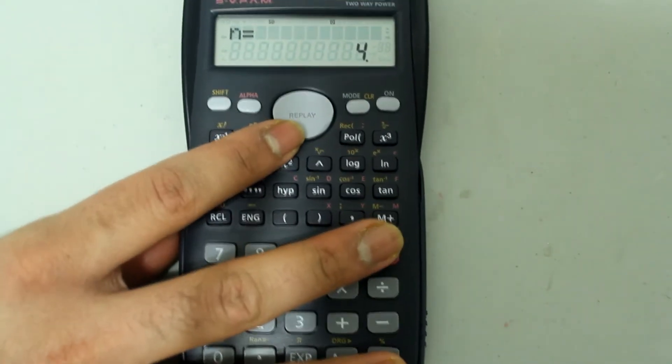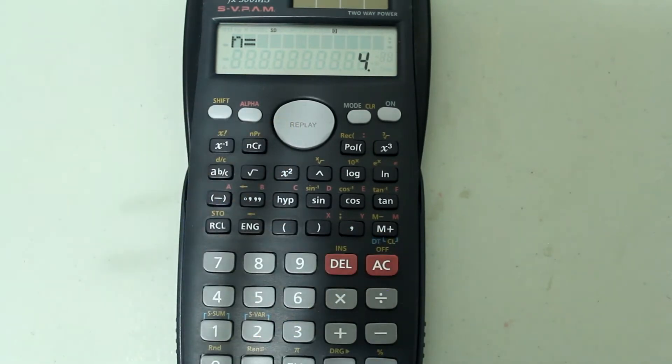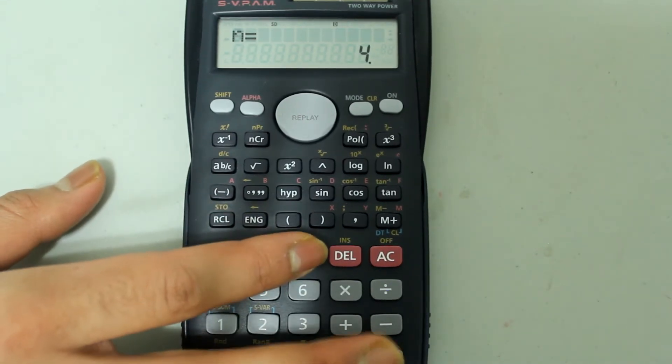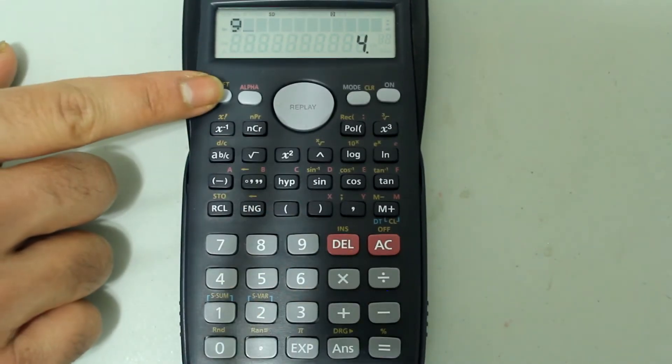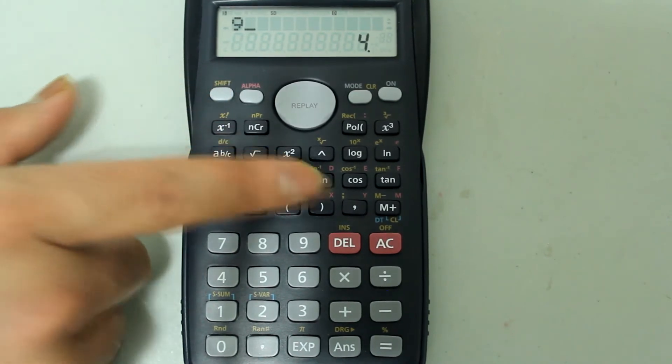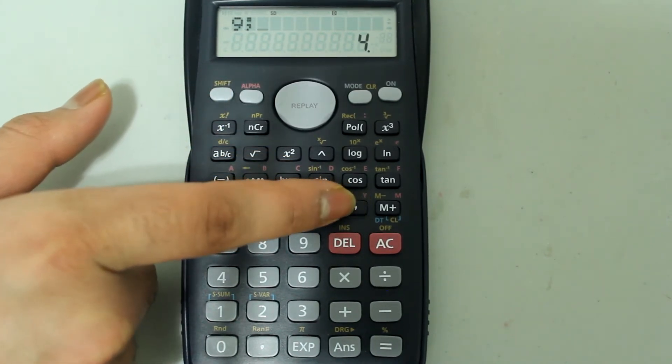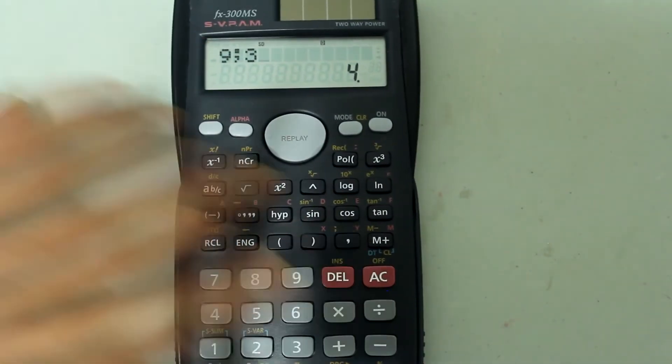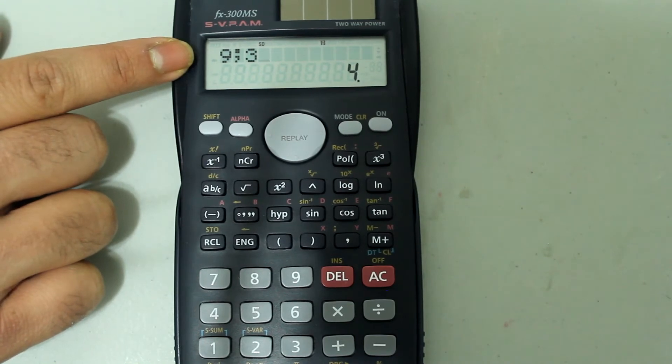Now like I mentioned there are three nines, so instead of having to type in 9 three times I'm going to type in 9 and then press shift and the comma button to select the semicolon option, and I'm going to type in 3. That's letting the calculator know that 9 appears three times in the set.